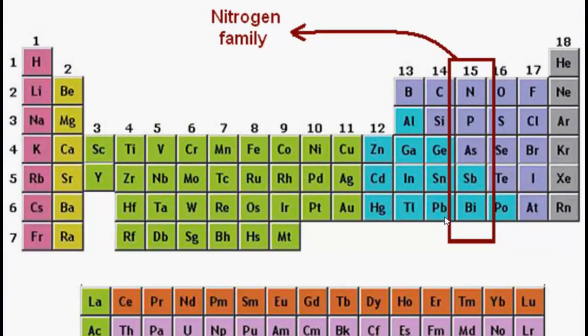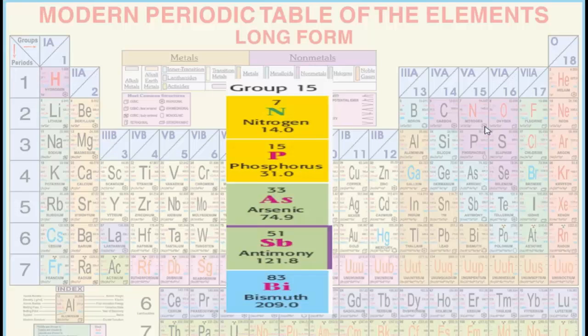Friends, nitrogen family is the fifteenth group of the modern periodic table. You can see here the image, it is the group on the right side of the modern periodic table. We call it nitrogen family just because nitrogen is the first element of this group. The elements present in this group are nitrogen, phosphorus, arsenic, antimony, and bismuth.